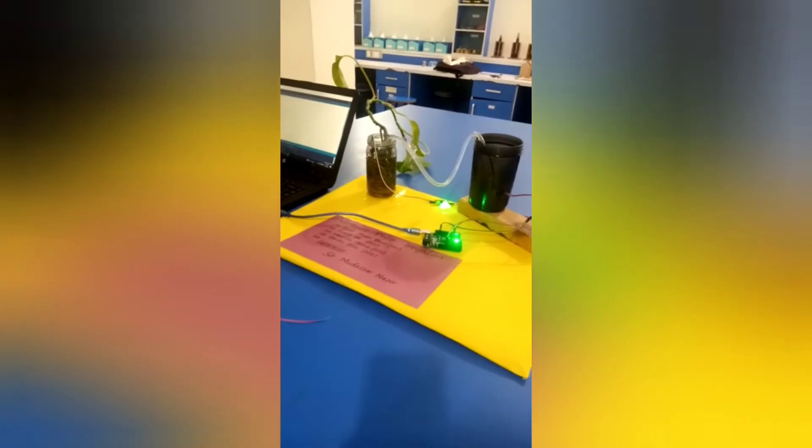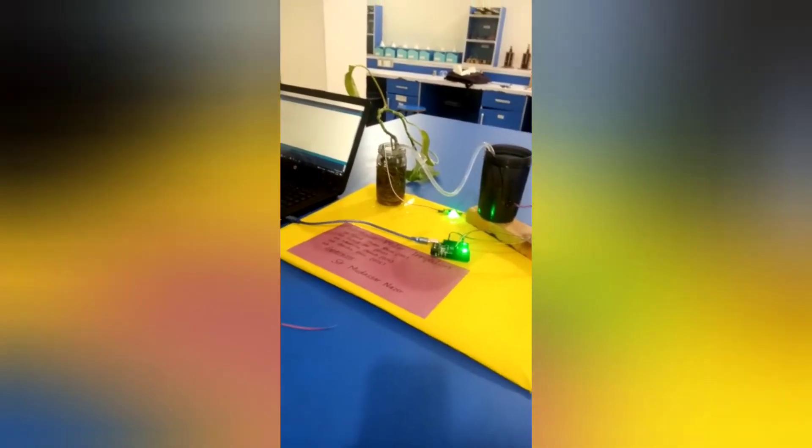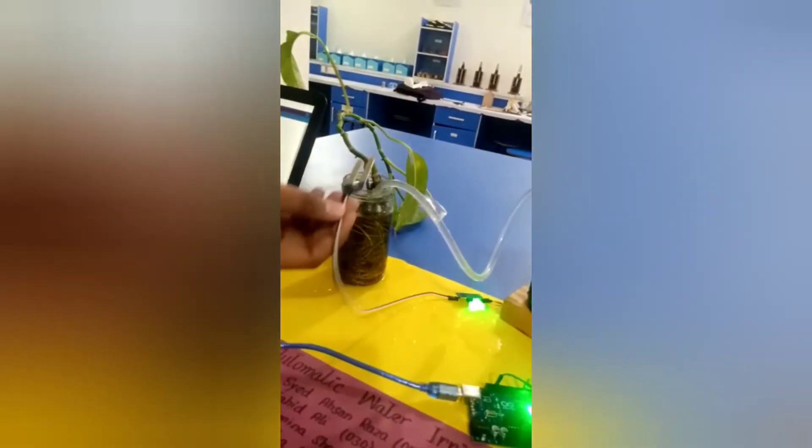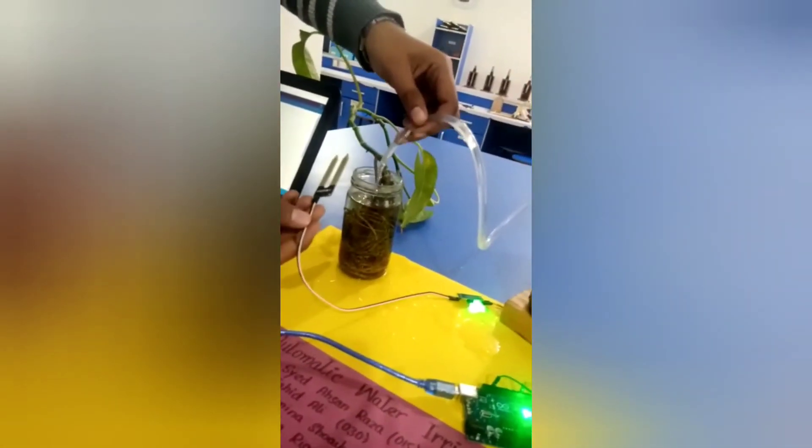For example, we have a plant and we have a sensor. When the sensor detects no water, it will give a signal to the Arduino board, which will give a signal to the motor. This automated system will work on the irrigation system within the fields.